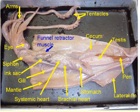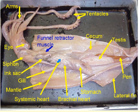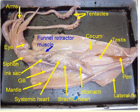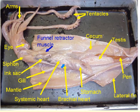Looking at another view of the internal structures, we can clearly see the pen running down the length of the squid. Regarding the circulatory system, the systemic heart is the true heart that pumps blood throughout the body. The branchial hearts, located on either side near the gills, are sometimes called gill hearts. Their purpose is to help pump oxygen obtained from the gills back to the systemic heart and throughout the rest of the body.